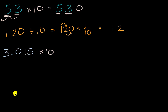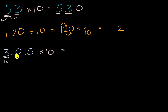Pause this video and see if you can figure that out. Well, the exact same thing is going to happen — all of our digits are going to shift one place to the left. Right now we have a three in the ones place, we have a zero in the tenths place, we have a one in the hundredths place, and we have a five in the thousandths place.